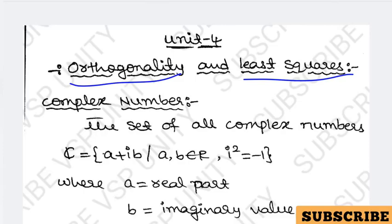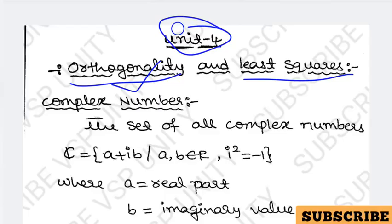If you want to learn all the topics in Orthogonality and Least Squares of Unit 4, you need to know some definitions and some basic concepts of complex numbers — like the imaginary part, what the real part is. You need to know some basic definitions. The first definition is: what are complex numbers?